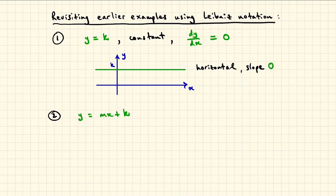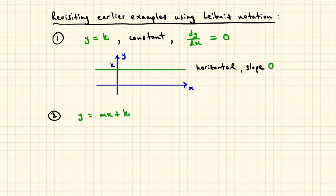Next, if y equals mx plus k is a linear function, where m is the slope and k is the y-intercept, then y changes m units uniformly for each unit that x changes. So dy dx is the constant m.